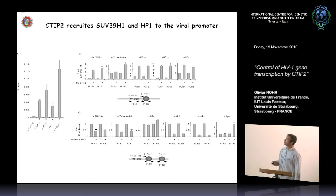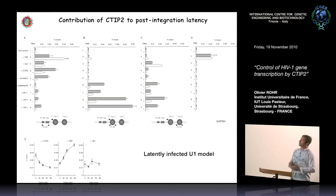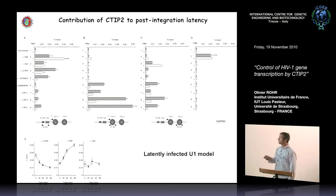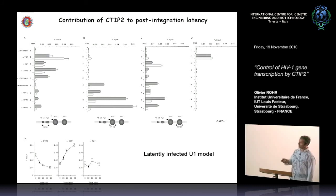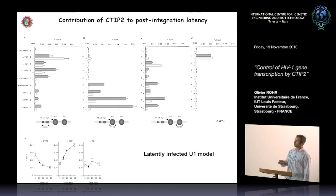CTIP2 is able to associate with HDAC and SUV39H1 and is able to create heterochromatin at the HIV-1 promoter. We also looked at the wall complex and its displacement in the U1 monocytic latently infected model upon PMA treatment. By time-course ChIP targeting CTIP2 upon PMA treatment, we saw that CTIP2 is displaced from the promoter, and simultaneously saw recruitment of the histone acetyltransferase CBP/p300. SP1 binding was not modified.